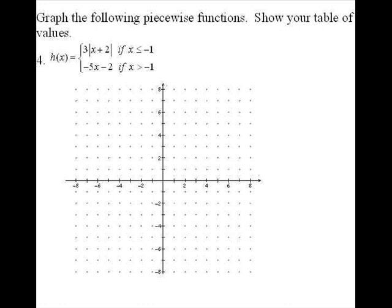If we look at this first problem, this is actually from number four from the first night of piecewise function homework. You can see we have two pieces to the graph. We have the absolute value function 3|x+2| for x values that are less than or equal to negative one, and we have -5x-2 if you're going to use an x value that's bigger than negative one.